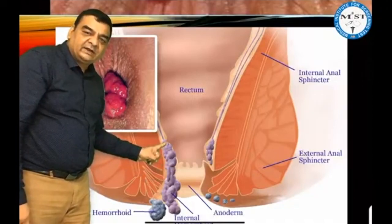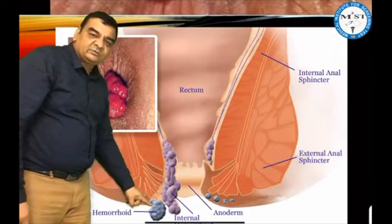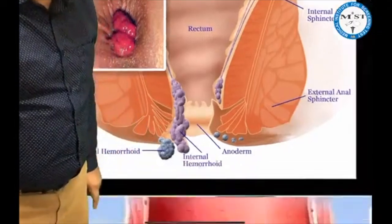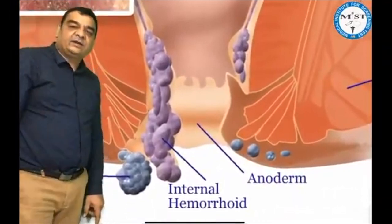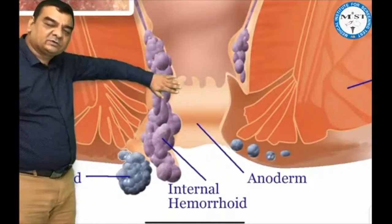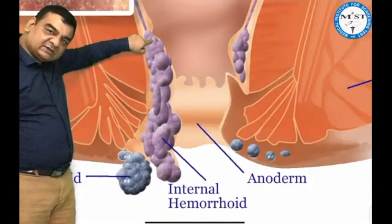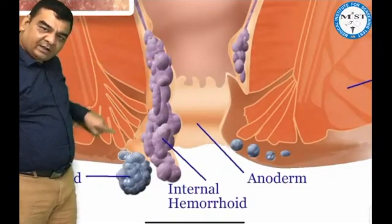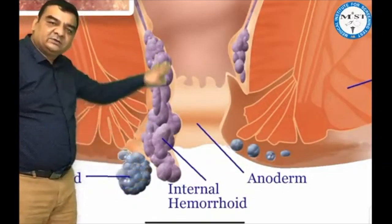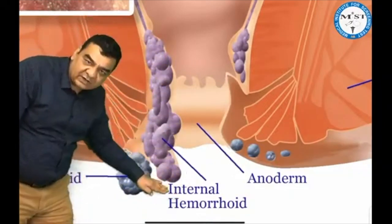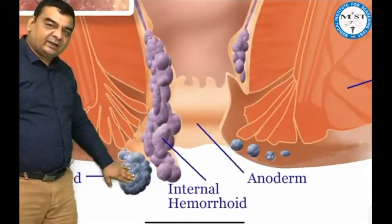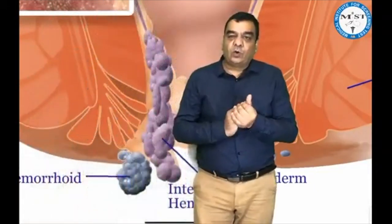If this prolapse occurs above the dentate line, that is an internal hemorrhoid. If this prolapse occurs below the dentate line, this is an external hemorrhoid. So if the pile is starting above this junction it is internal; if the pile is beneath this junction it is external. This one is the internal hemorrhoid — though it is coming outside, it is starting from inside. And this is a totally external hemorrhoid.